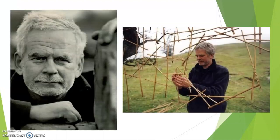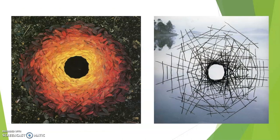Mr. Goldsworthy is a British sculptor and photographer who likes to make artwork called site-specific installations. That means he works on his artwork and builds it right where he would want you, the viewer, to see it — whether that might be outside on a grassy hill or next to a lake, even sometimes building his artwork out in the snow. He uses things like rocks, ice, leaves, or branches to help create his artwork.